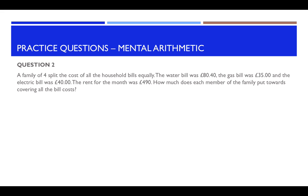Question two. A family of four split the cost of all the household bills equally. The water bill was £80.40, the gas bill was £35, and the electric bill was £40. The rent for the month was £490. How much does each member of the family put towards covering all the bill costs?